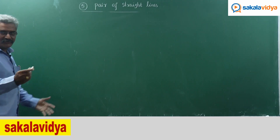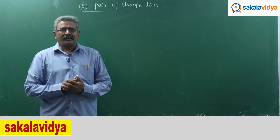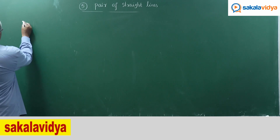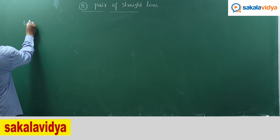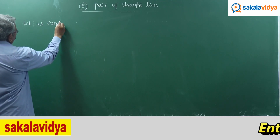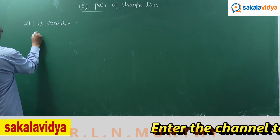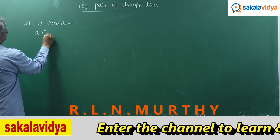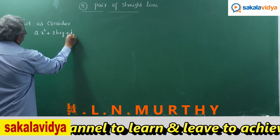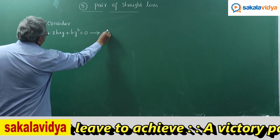Now, let us consider the homogeneous equation representing a pair of straight lines. Let us consider Ax² + 2hxy + by² = 0, say equation 1.